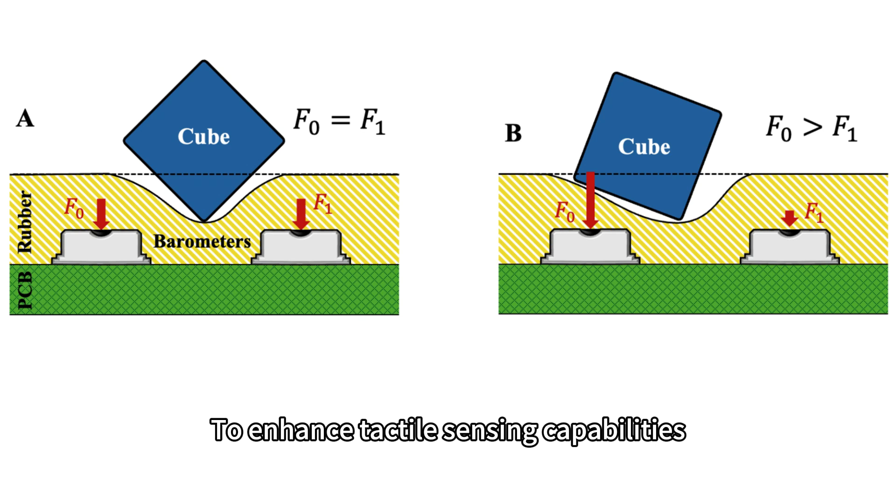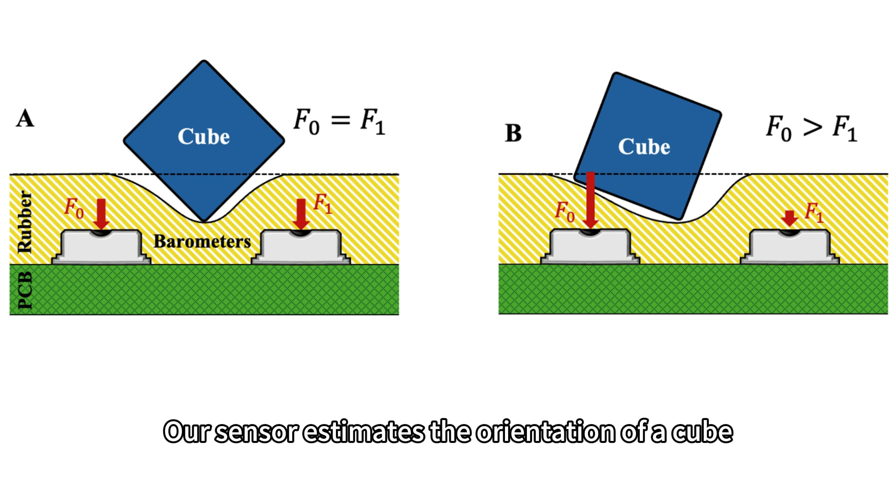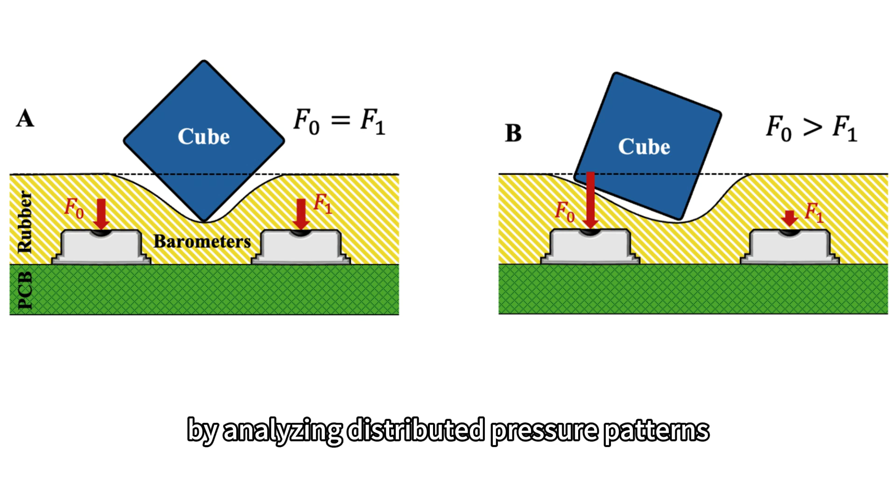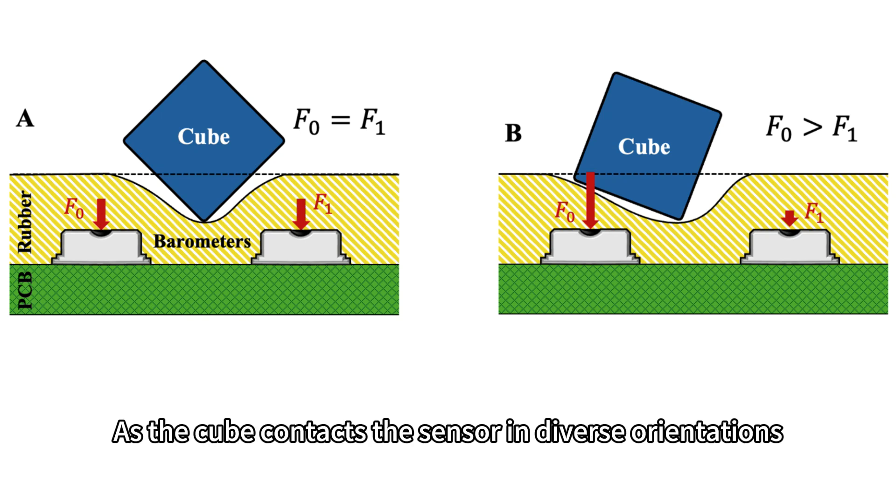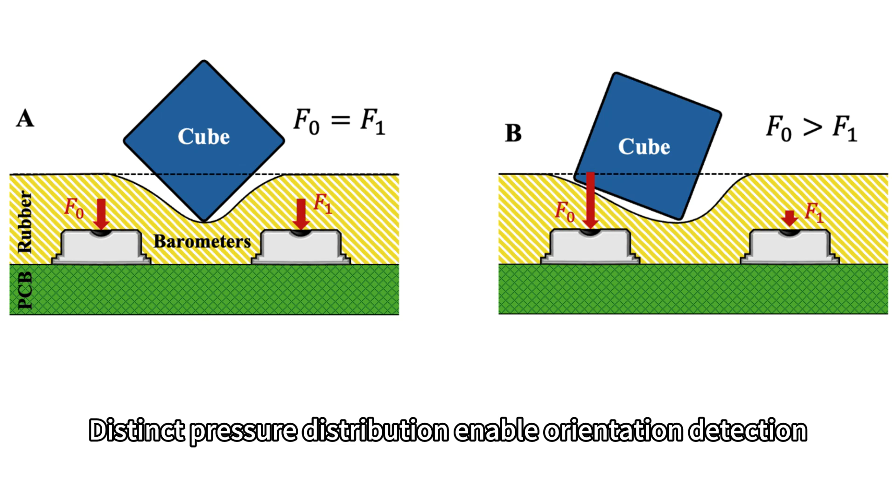To enhance tactile sensing capabilities, we move beyond point localization. Our sensor measures the orientation of a cube by analyzing distributed pressure patterns. As the cube contacts the sensor in diverse orientations, distinct pressure distributions enable orientation detection.